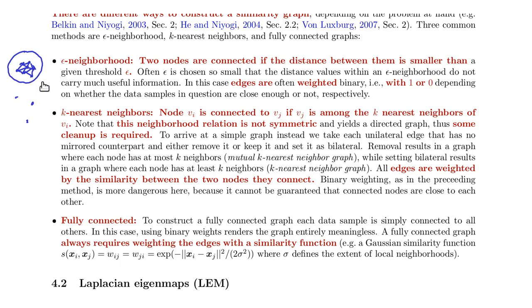Either you introduce edges only if you have a back and forth connection, that would be the mutual k-nearest neighbor graph. Alternatively, you can always introduce edges. If this is connected to this one, you also introduce a back connection, and that would be the k-nearest neighbor graph.